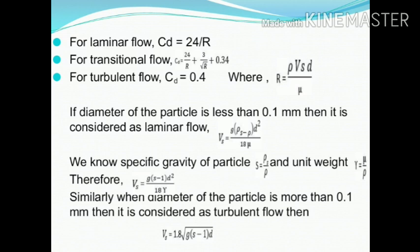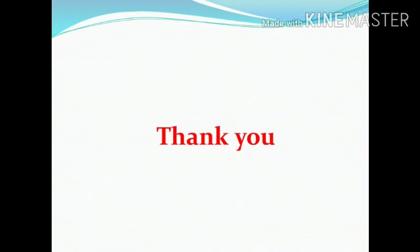Similarly, when the diameter of the particle is more than 0.1 mm, turbulent flow is assumed and the settling velocity equation is modified to: vs = 1.8 · √(g(S − 1) · d). Thanks for watching; please mention your feedback in the comment box.